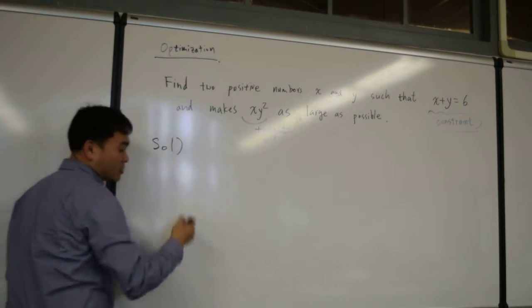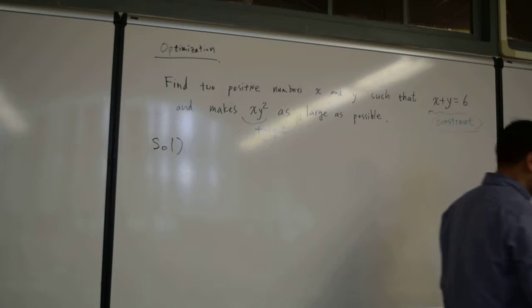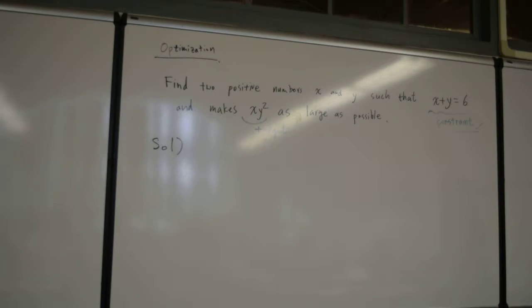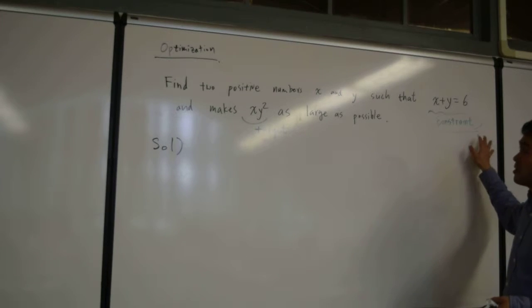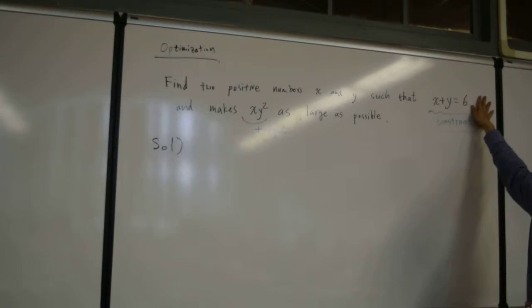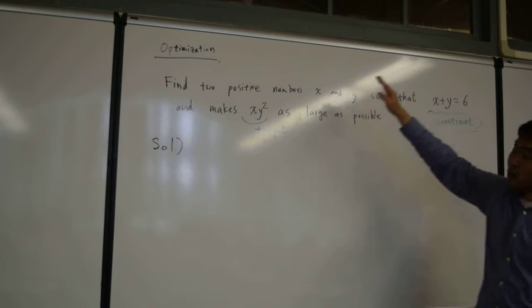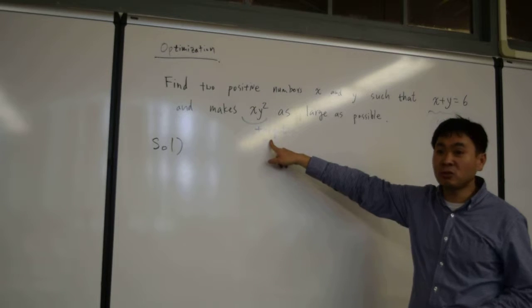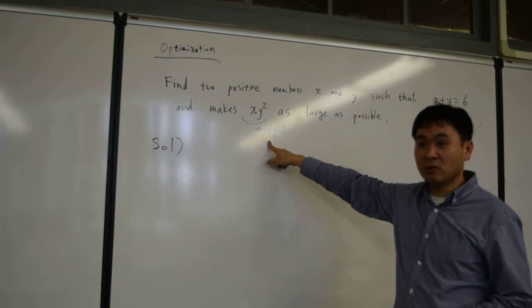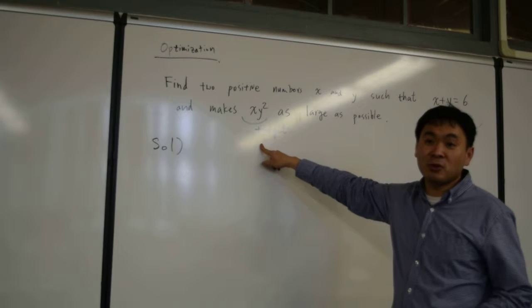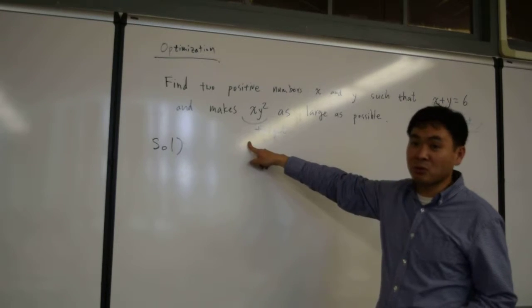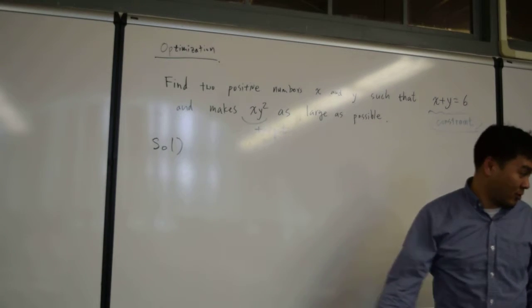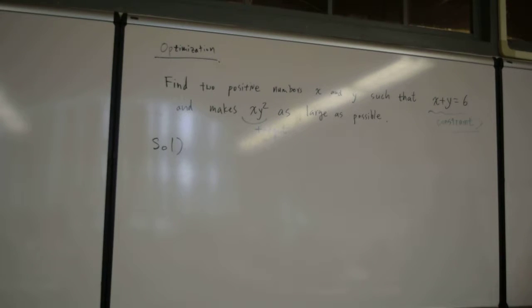The solution strategy for such questions is very simple. First solve the constraint for one of the variables, plug it into the target function so that the function you have is a function of a single variable. Then if you have a function of a single variable, you can use derivatives to figure out the maximum minimum. So let's do that.